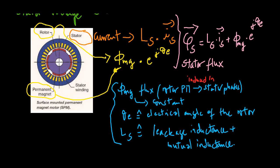If λ_mg is the amplitude of the flux induced by the permanent magnets of the rotor in the stator phases, and this parameter is assumed constant in the design, theta_E is the electrical angle of the rotor, and L_s is the sum of leakage inductance and mutual inductance.